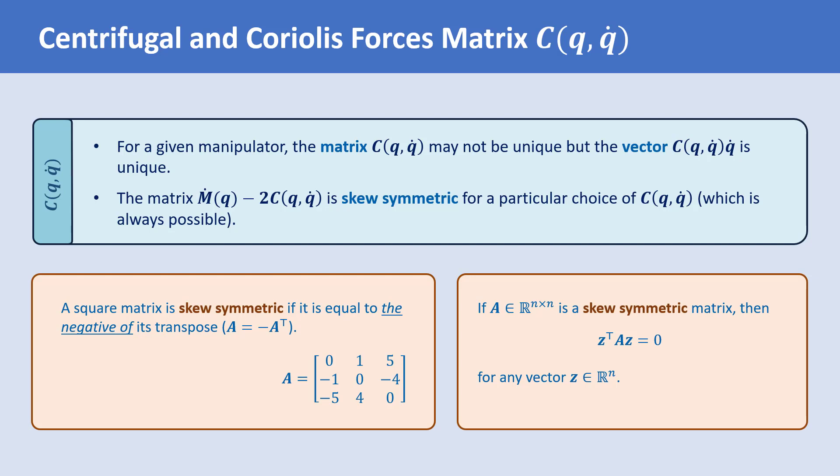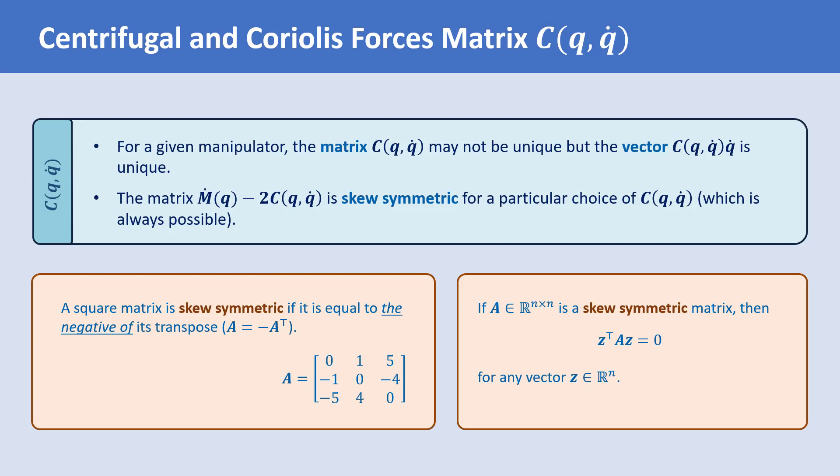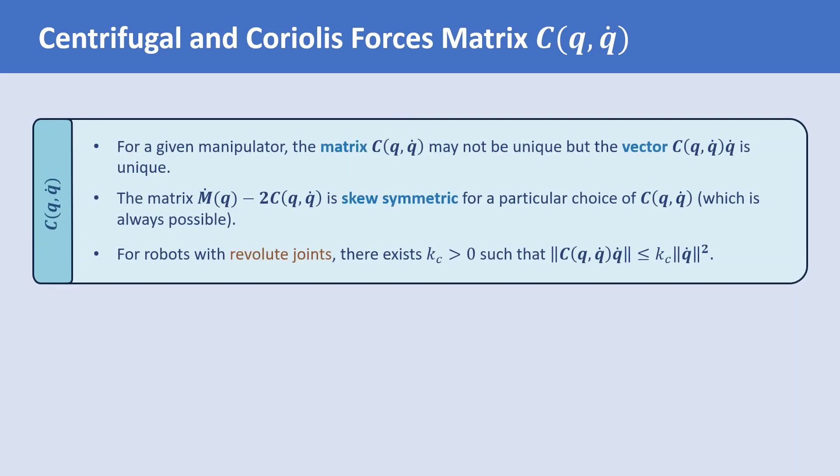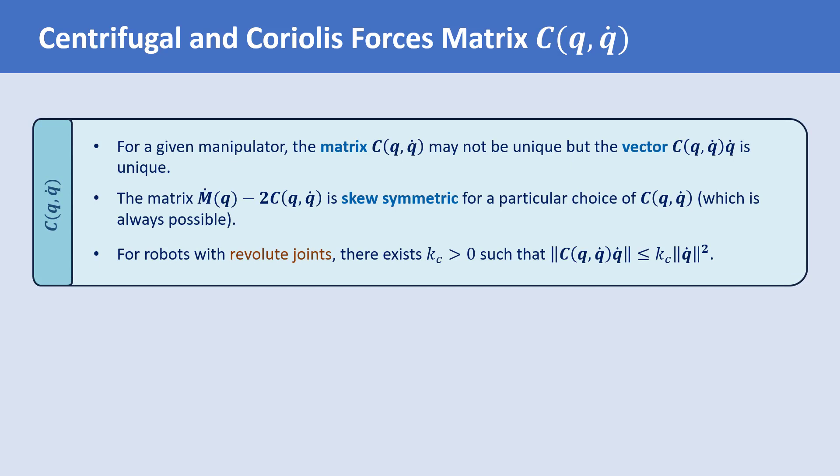The third and final property of matrix C only holds for robots with revolute joints. For such robots, there exists a positive constant Kc such that the norm of the vector of centrifugal and Coriolis forces is less than or equal to Kc times the norm of Q̇ squared.